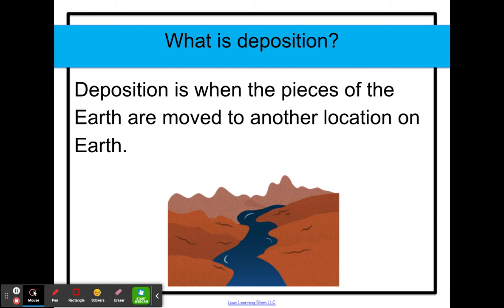And now we have deposition. So what happens when the sediments of the earth are moving? Deposition is when the pieces of the earth are moved and stop at another location on the earth.